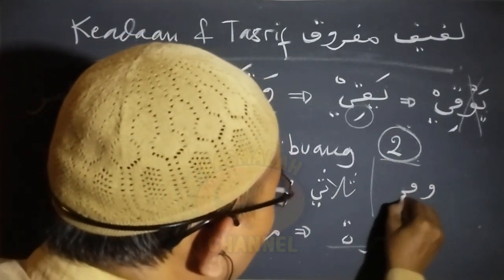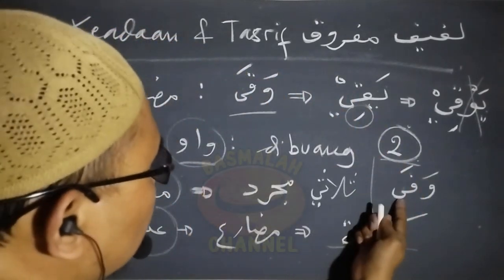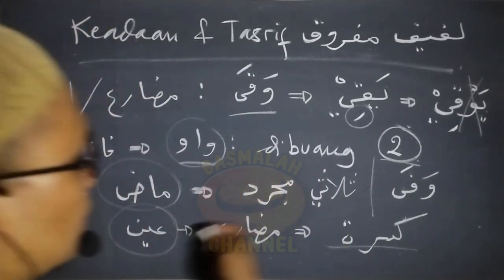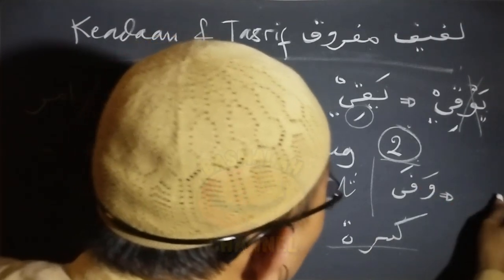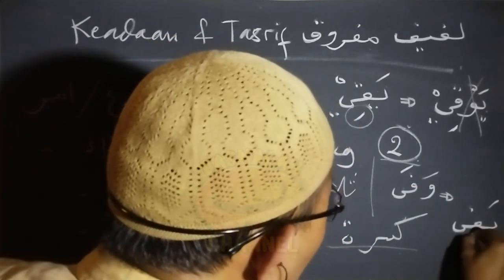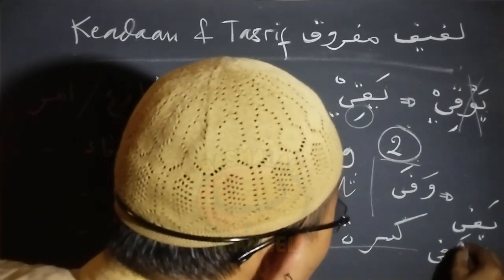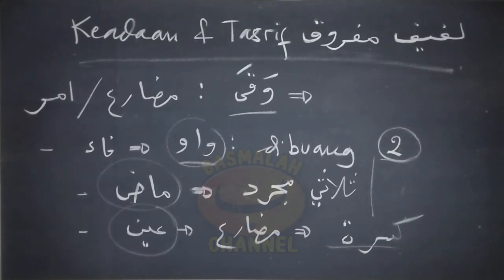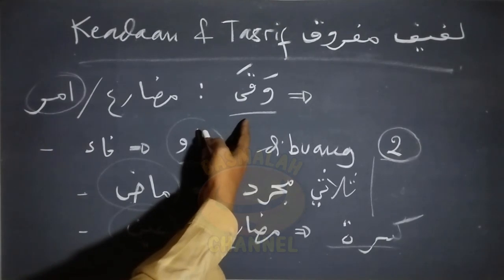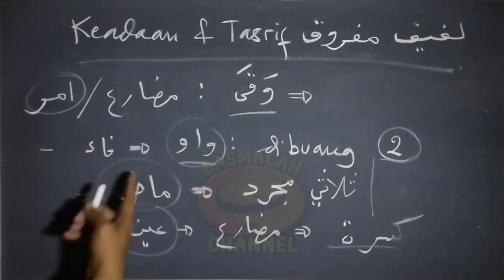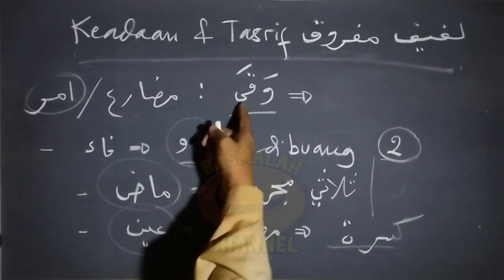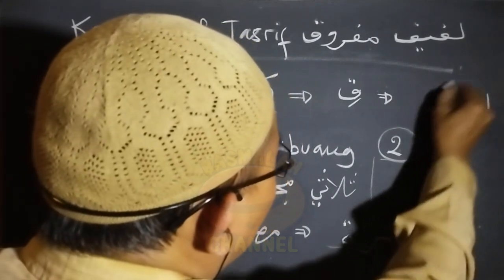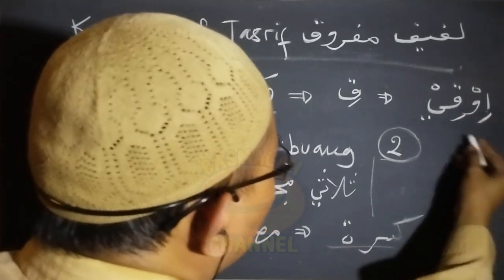Contoh yang lain, seperti yang terjadi pada lafad wafa. Proses daripada wafa dan waqo ini sama, yaitu sama-sama bentuk fi'il madinya berupa tulasi mujarrad, dan pada bentuk fi'il mudhari'nya ain fi'ilnya berharkat kasrah, sehingga wawnya di sini dibuang. Wafa bentuk fi'il mudhari'nya adalah yafi. Aslinya adalah yawfi, karena memang sudah memenuhi syarat maka waw pada fa'fi'ilnya di sini dibuang. Selanjutnya contoh ketika berbentuk fi'il amar, lafad waqo ini juga ketentuannya sama dengan ketika berbentuk fi'il mudhari'. Manakala sudah memenuhi kedua syarat ini, bentuk fi'il amar daripada lafad waqo di sini adalah ki.